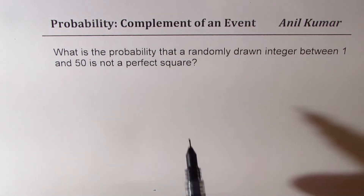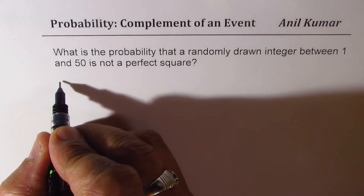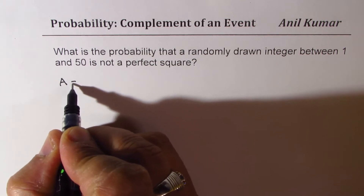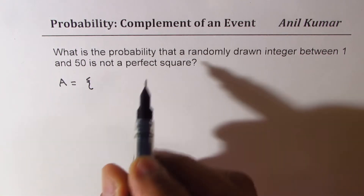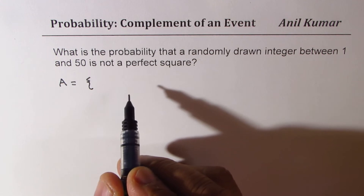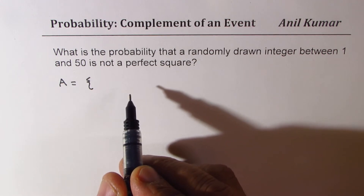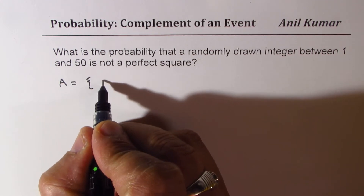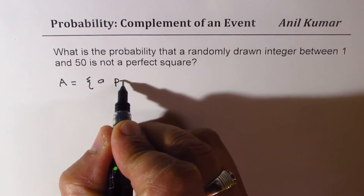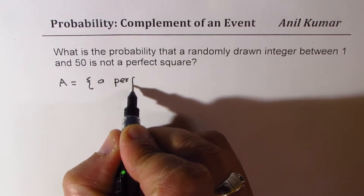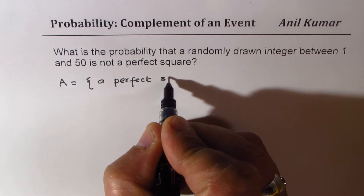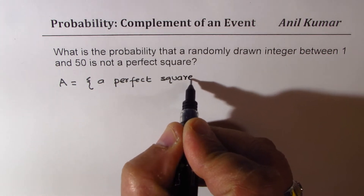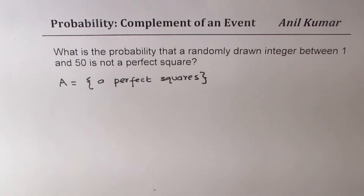To begin with, we can define our event A as the one which contains perfect squares. So event A could be defined as a perfect square. We know there are limited perfect squares between 1 to 50. When we say perfect squares, what numbers are we looking into?